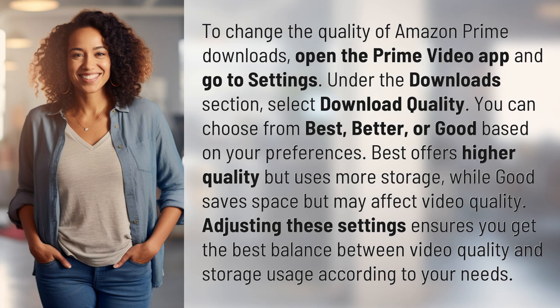To change the quality of Amazon Prime downloads, open the Prime Video app and go to Settings. Under the Downloads section, select Download Quality. You can choose from Best, Better, or Good based on your preferences.